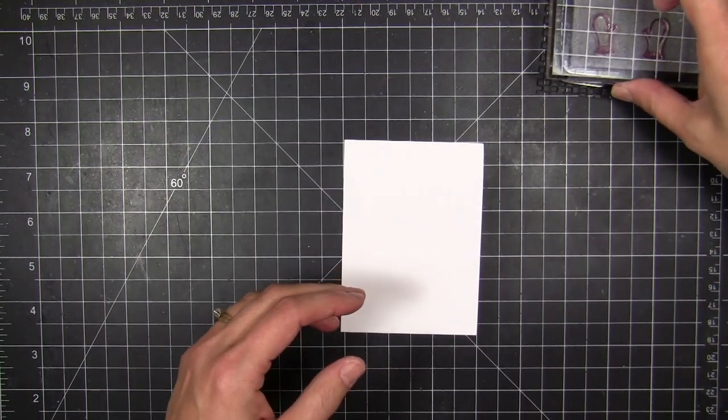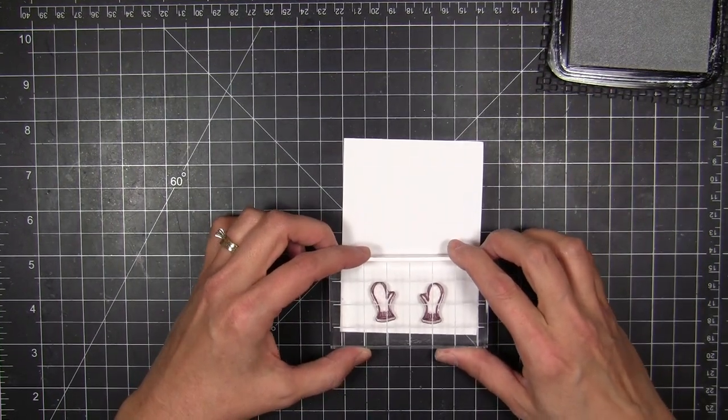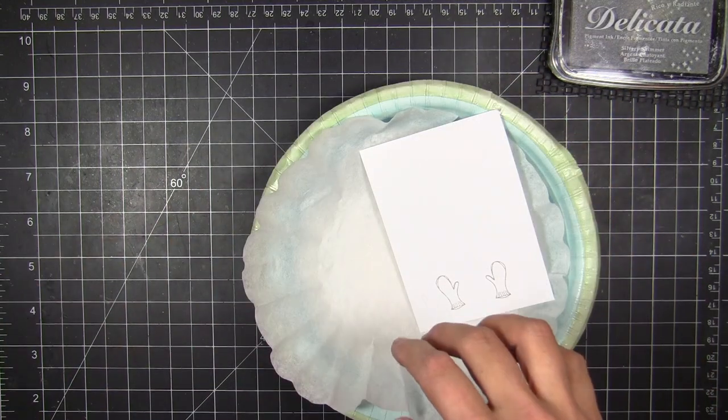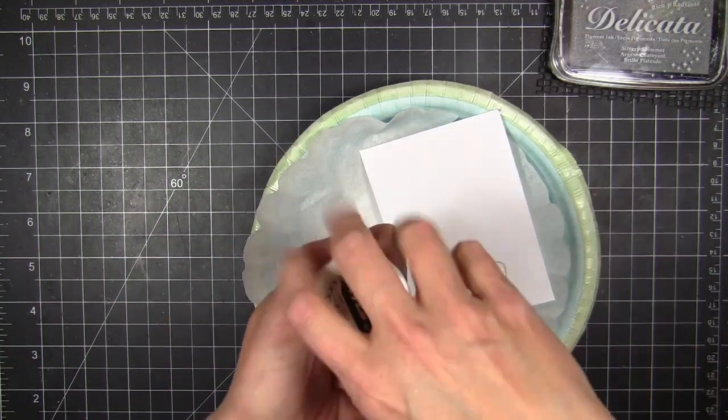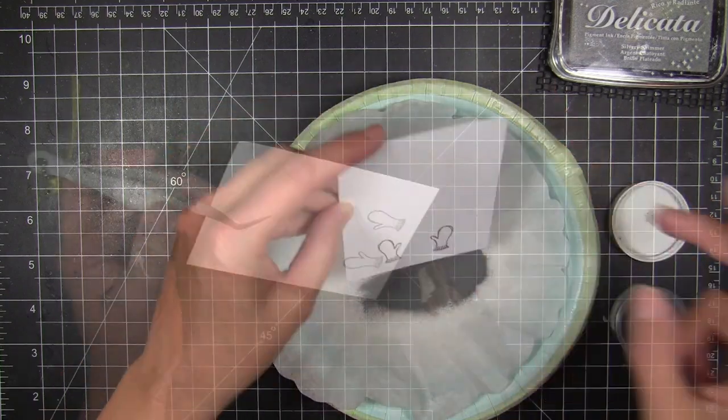I wanted to use the mittens in this set and I decided to, at first I was going to watercolor them and then I kind of changed my mind. And I'm stamping with the silver Delicata ink onto some letter press paper and I'm going to emboss with some detail fine grind silver embossing powder.